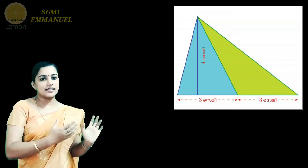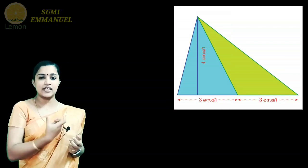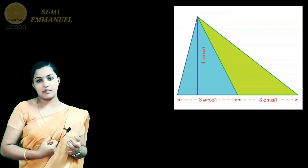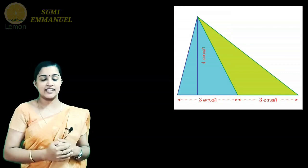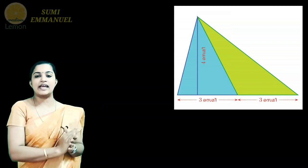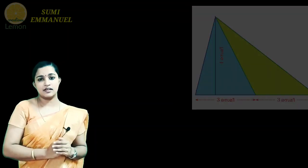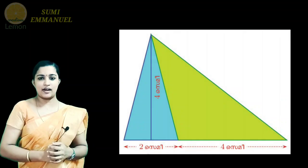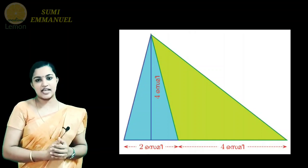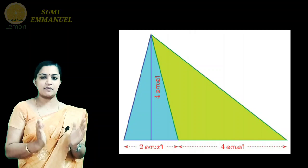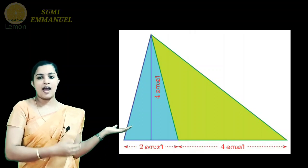We have two triangles. The two triangles are equal. If the two triangles are equal, we need to make the same angle. The total area is 12 cm squared. Now we have two triangles in the first row. The base is 2 and 4 cm, total 6 cm base. We have two triangles.